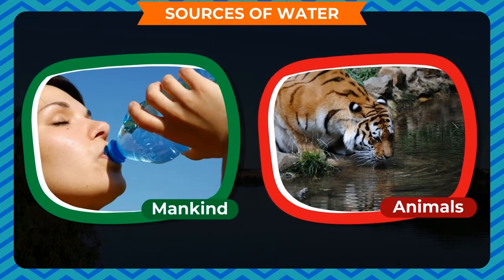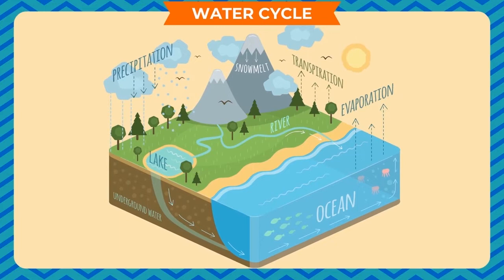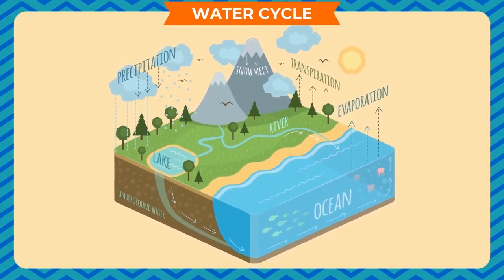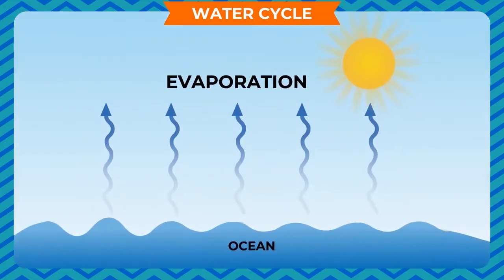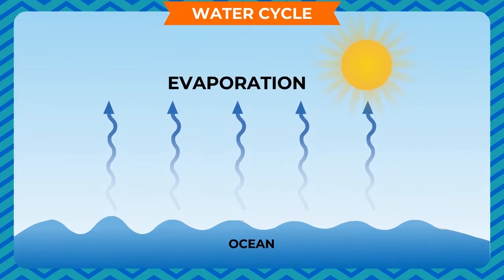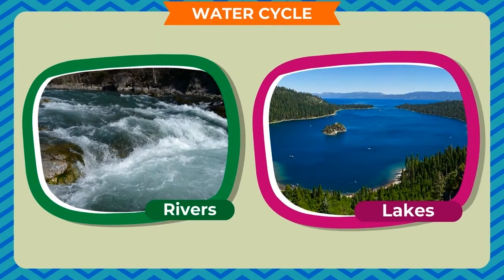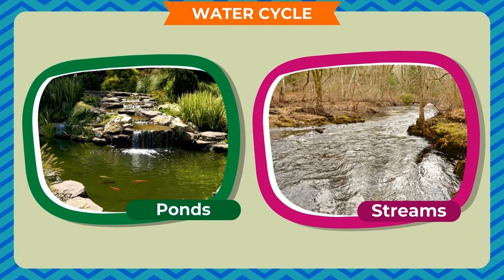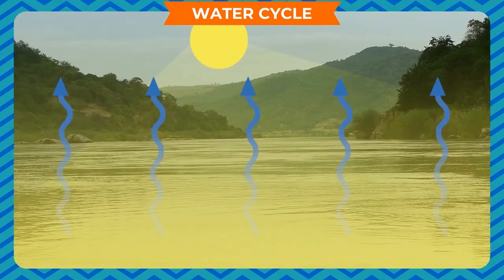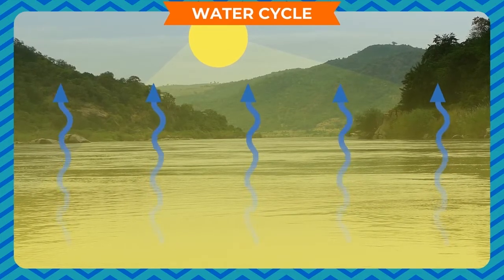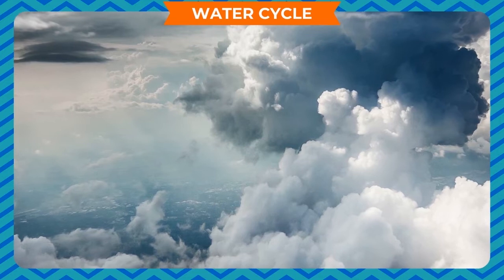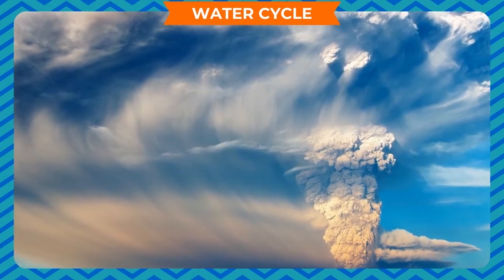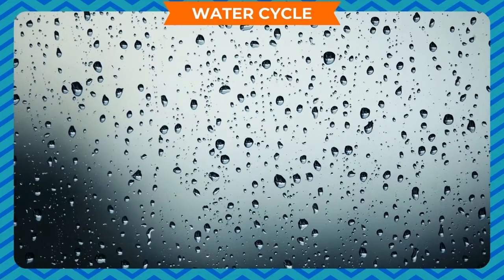Water cycle: The journey of water from the land to the sky and back to land is called the water cycle. The atmosphere plays a very important role in its formation. Water in oceans, seas, rivers, lakes, ponds, and streams evaporates due to the heat of the sun. The water vapor formed rises up; higher in the atmosphere the air is cool, which condenses the water vapor to form water droplets.